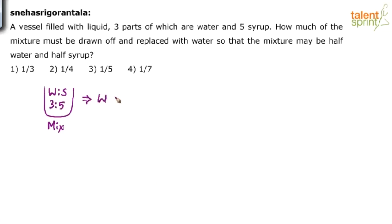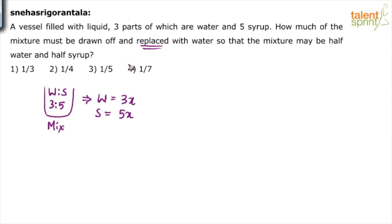Let us assume water is 3 parts and syrup is 5 parts. Now, how much of the mixture must be drawn off? You are removing some mixture and replacing it with water. Let's say we remove q liters of mixture and add q liters of water, so that the mixture may be half water and half syrup.